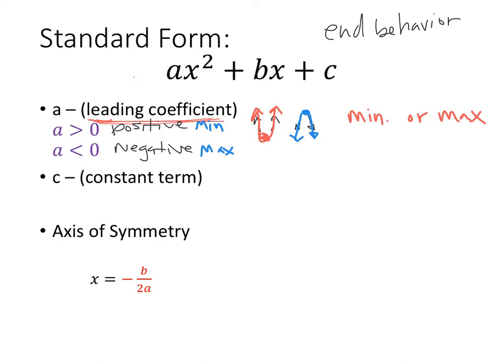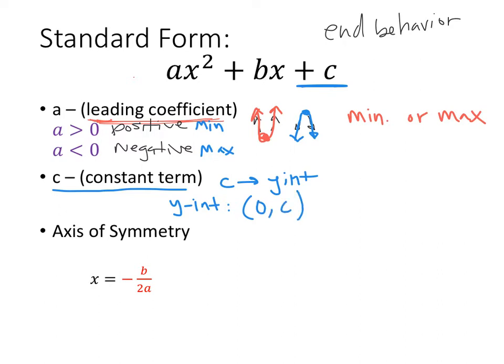We also have c, which is the constant term. That constant term is going to give us our y-intercept, just like the plus b in mx + b for linear equations. The y-intercept is always the ordered pair (0, c). Whatever that value is, we plug it in. If c isn't there, it's zero and the y-intercept is at the origin.